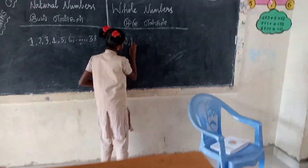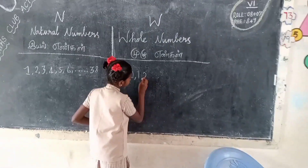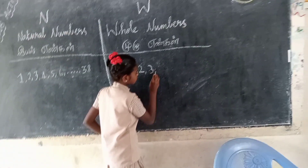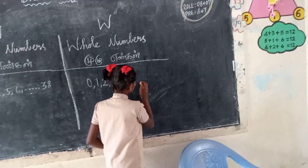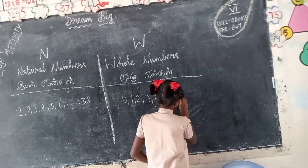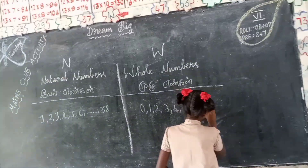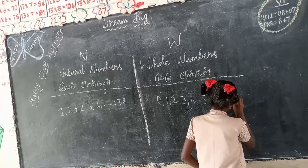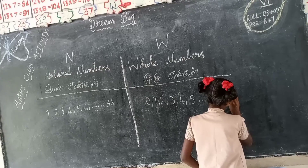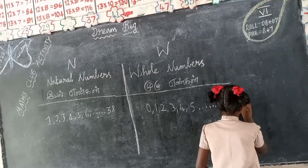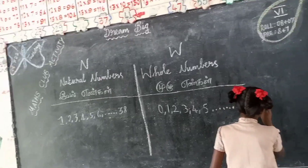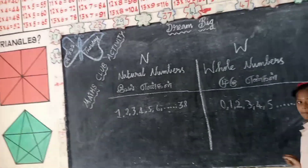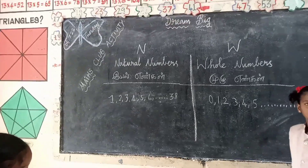Yes, whole numbers start with zero. Do you understand, children? Yes. Whole numbers start with what number? Zero. Whole numbers will start with zero. Natural numbers will start with one. Yes, very good.